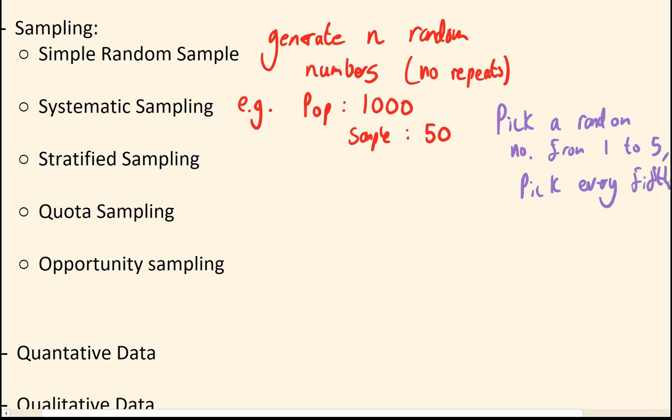So pick a random number from 1 to 5 and then pick every 5th person after that. So if I picked 1 first, I would then pick 1, 6, 11, 16. If I pick 2 first, I would then pick 2, 7, 12, 17, etc. This is basically easier than simple random sampling because there's no chance of getting repetitions. The only downside here is you're assuming that your numbered system is perfectly fair. There's no sort of clusters or people have missed out or anything like that.